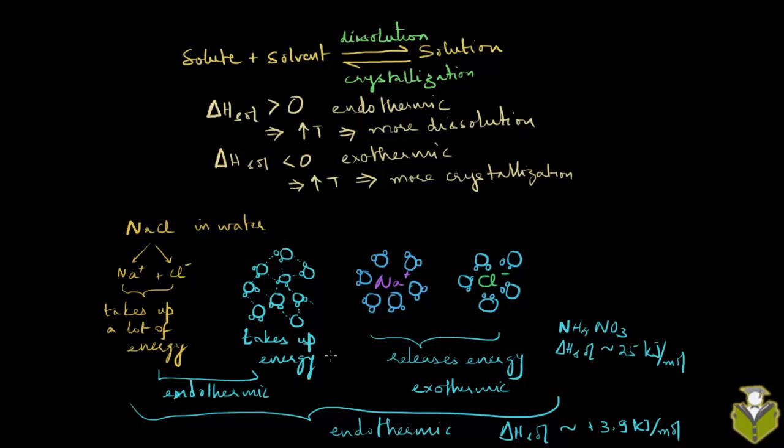You can also have salts such as calcium chloride, for example. This is one salt that is in fact used in heat packs. What happens here is the process of dissolution in water is highly exothermic. Here, the delta H solution is about negative 80 kilojoules per mole. It releases quite a lot of energy.